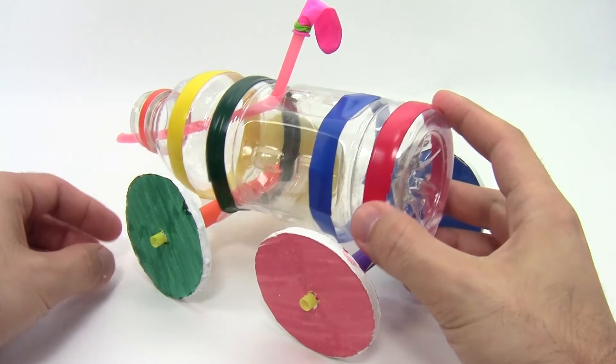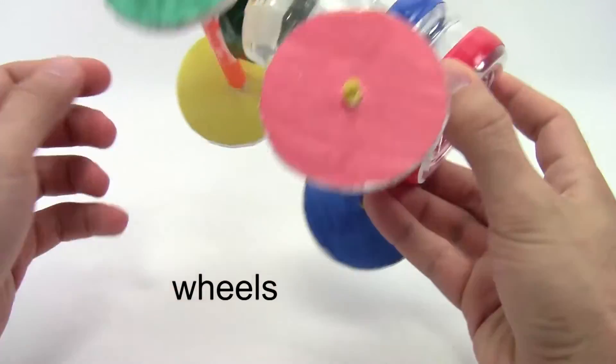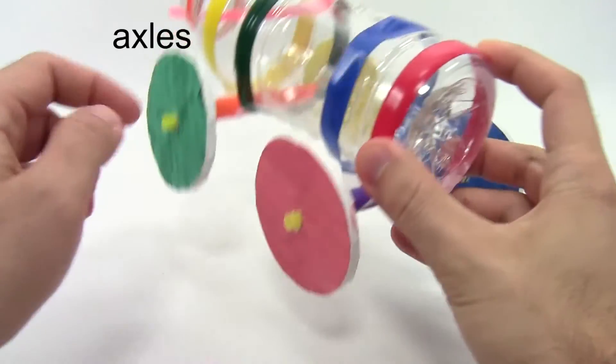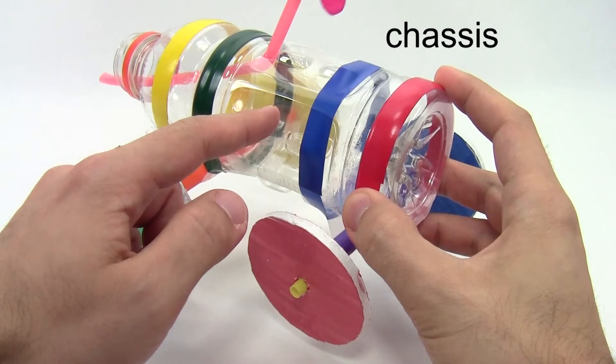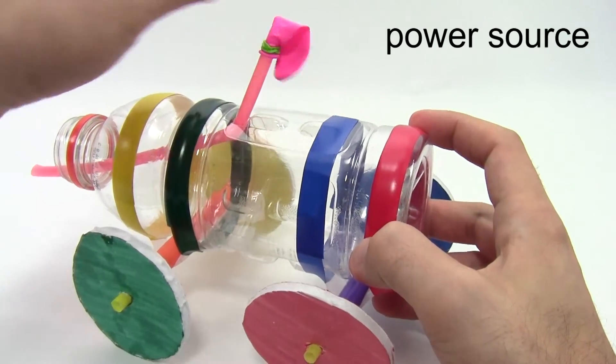Every car has four main parts. The wheels, the axles, the body, technically called the chassis, and the power source that makes the car move.